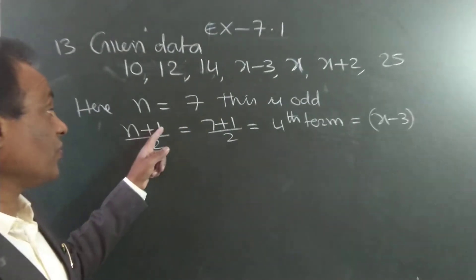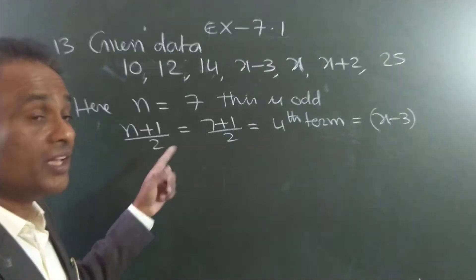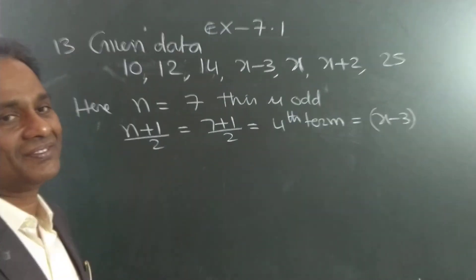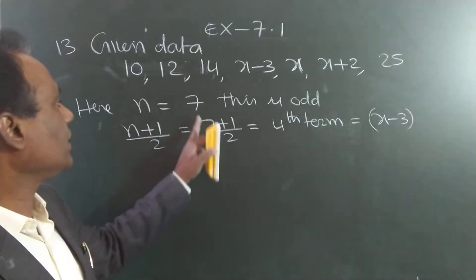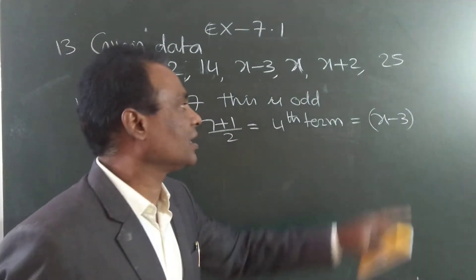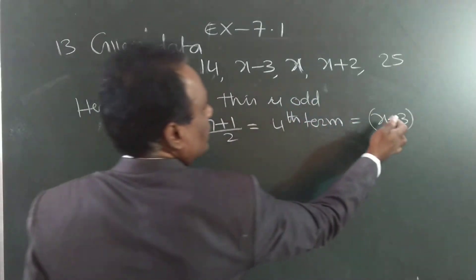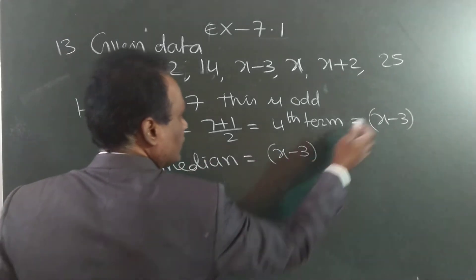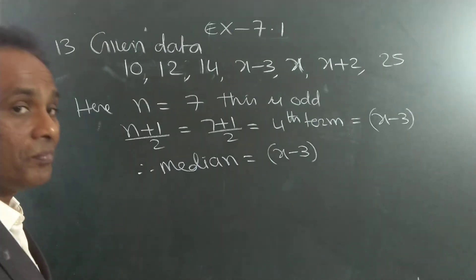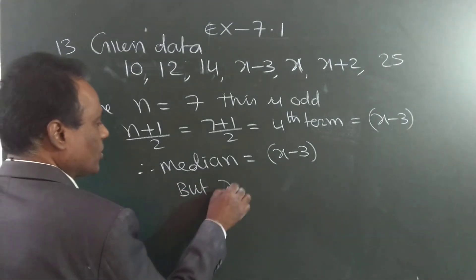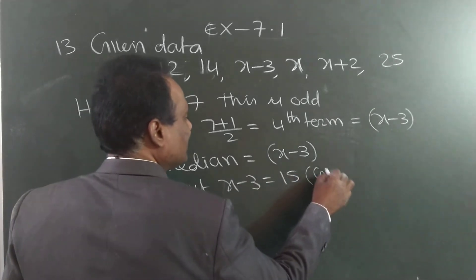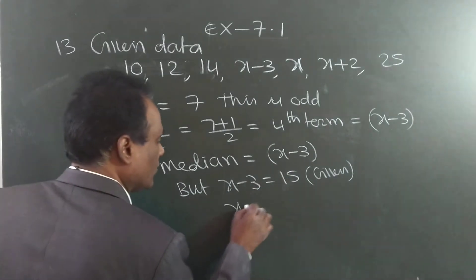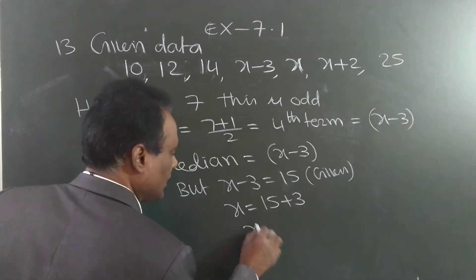If you want the steps: when it is odd, use n + 1 by 2; when it is even, use n/2 and n/2 + 1 to get two middle terms and take their average. Here, n + 1 by 2 = 7 + 1 by 2 = 4th term. So, median equals x minus 3. But in the textbook, the median is given as 15. Therefore, x minus 3 = 15, so x = 15 + 3 = 18.